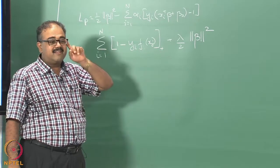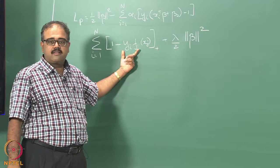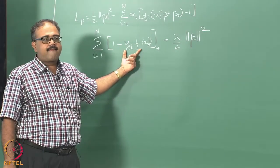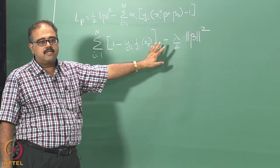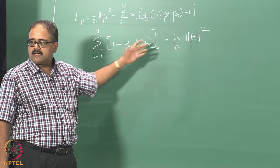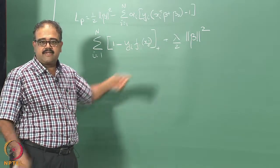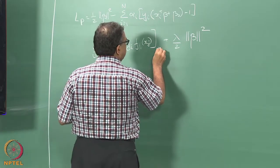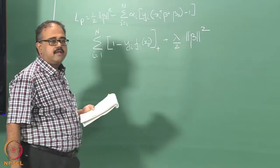What does the plus term mean? It means that I will count this only whenever it is positive — whenever it is negative I will make it 0. That is what the plus term here indicates.